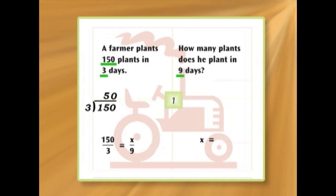So, we now know he does 50 plants in one day. But what is x? Well, first of all, we have to find out how many plants he plants in 9 days. So, we have to multiply the 50 by 9. And what do we get? 450. 9 fives are 45 and the 0, 450.